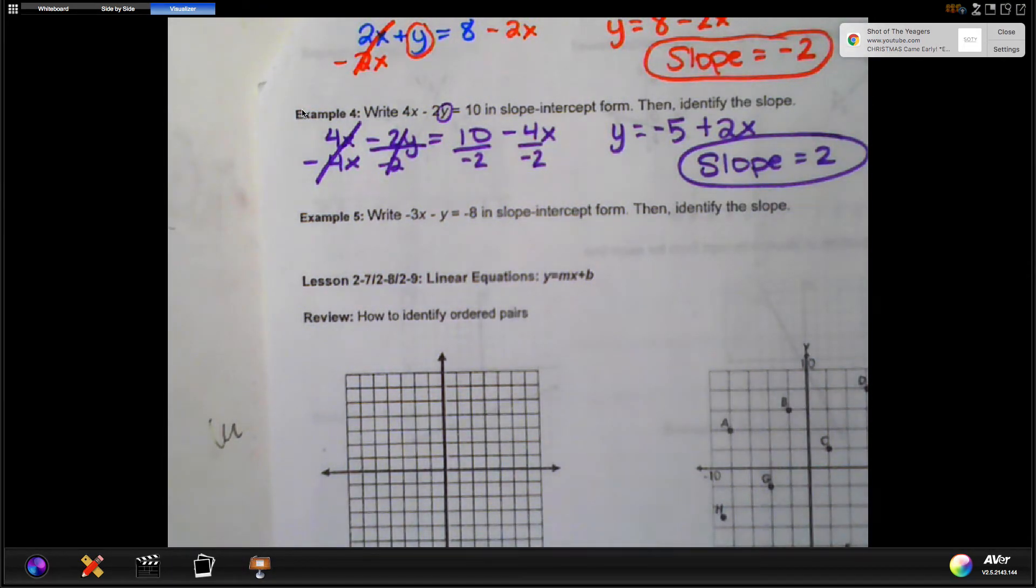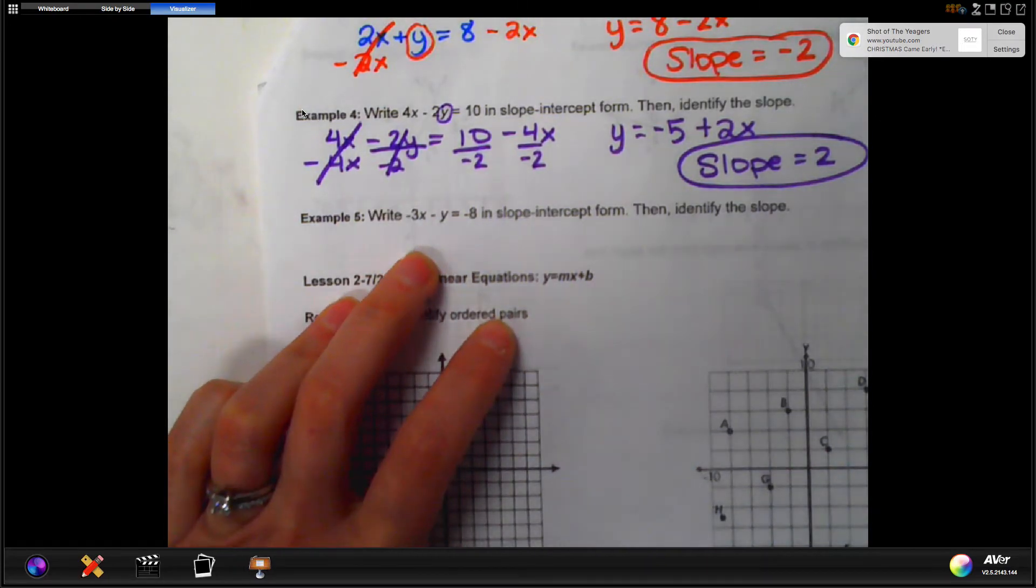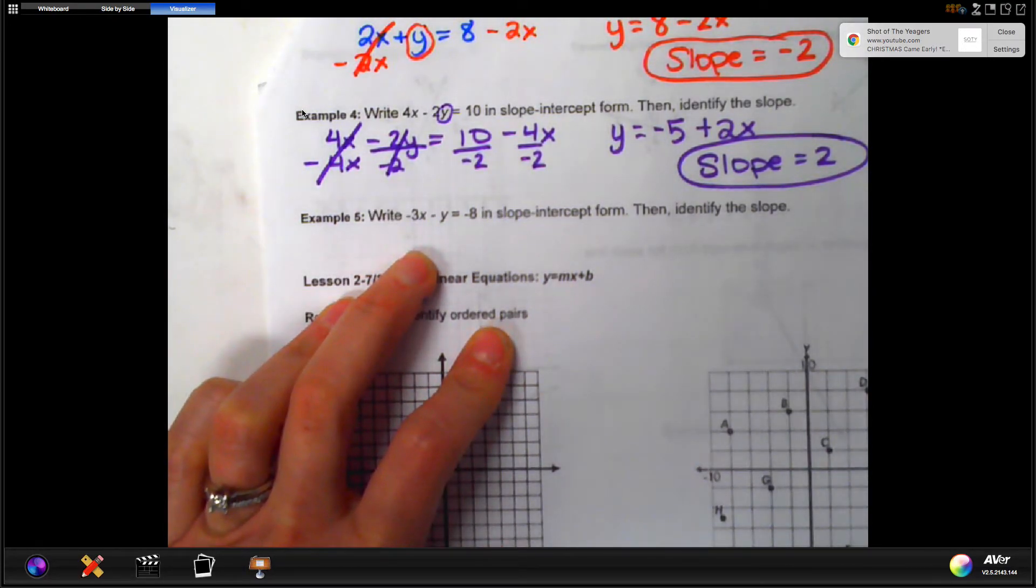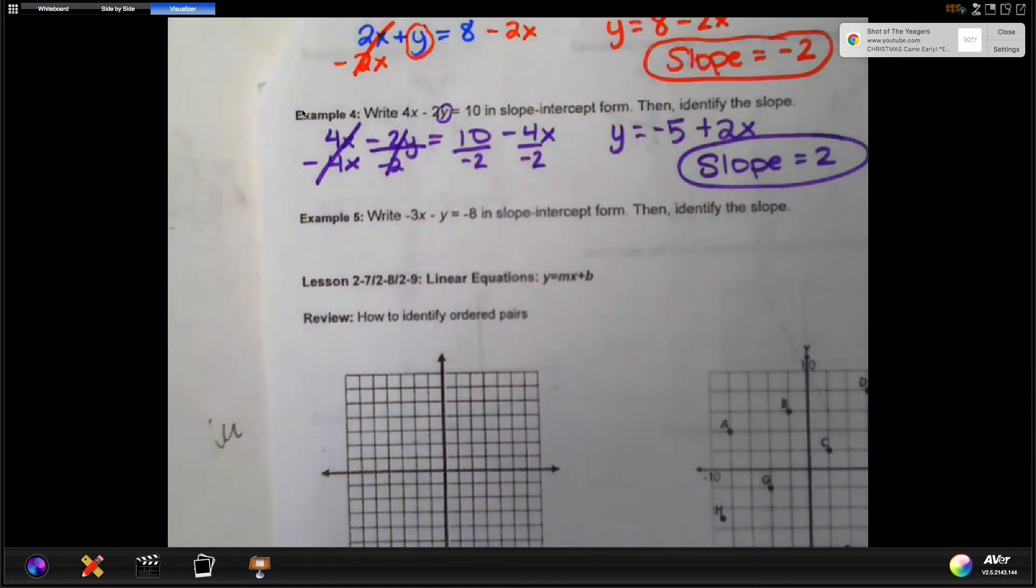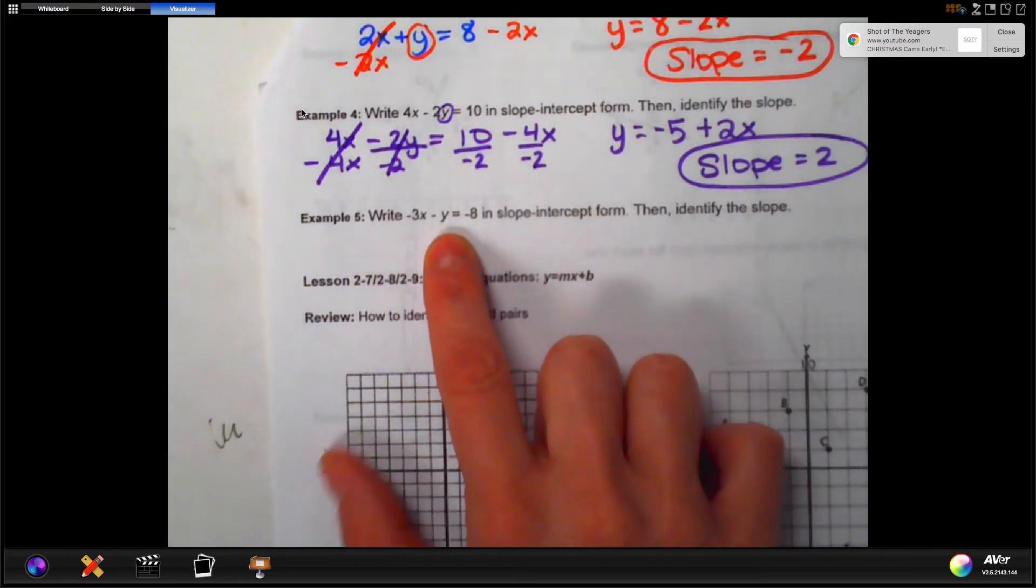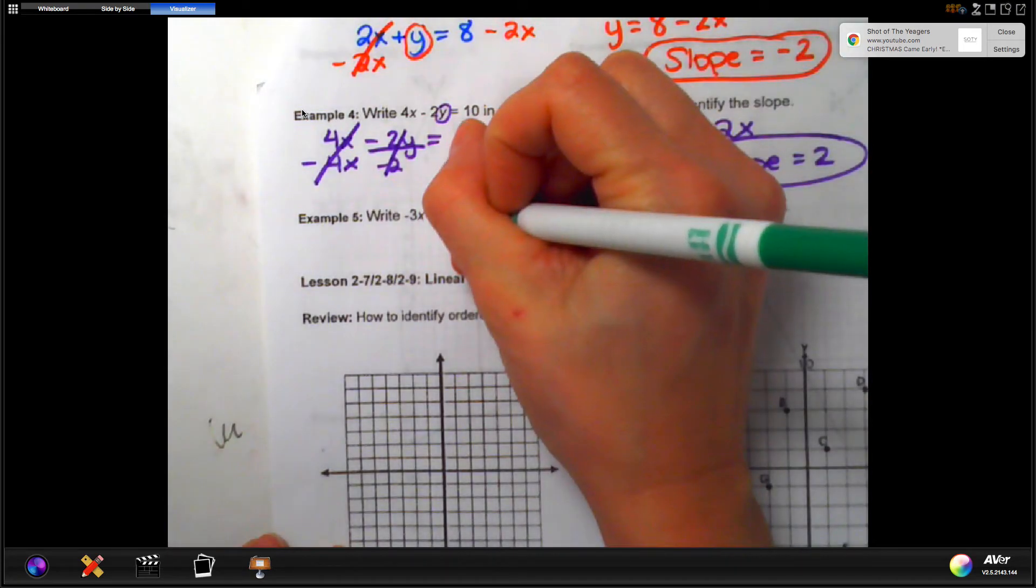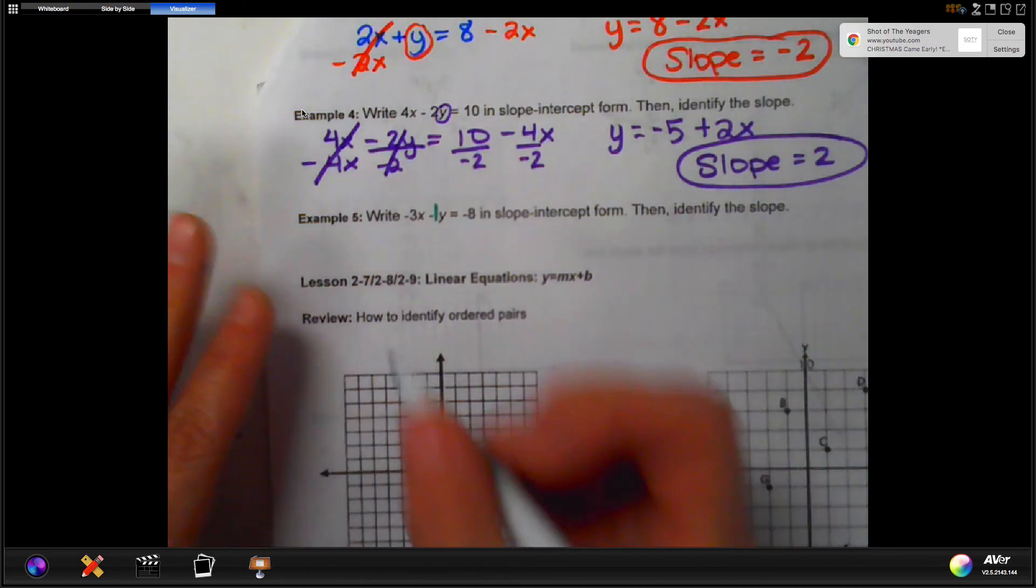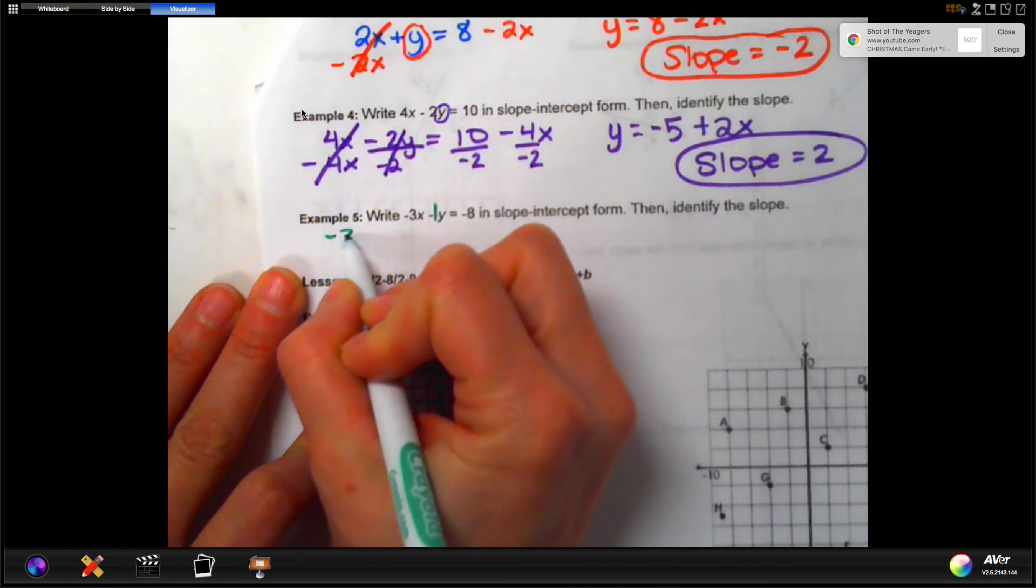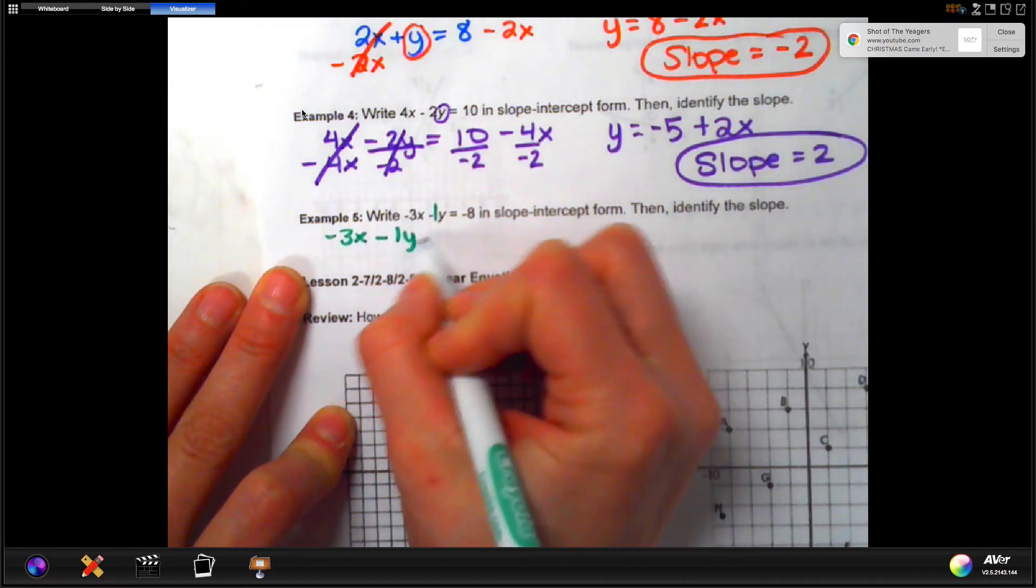There is one more example on there, which I will do with you, and it is write negative 3x minus y equal negative 8 in slope-intercept form, and then identify the slope. So this one, the reason I threw this in the notes is because you'll notice that y does not have a number in front of it, but it does have a minus sign. So, you might recall from earlier lessons that if there's not a number, but there is a minus sign, there's actually a hidden 1. So, we want to start by writing that in. Let's do this again. I'm going to rewrite it so that I have room to cross out what I need to cross out.